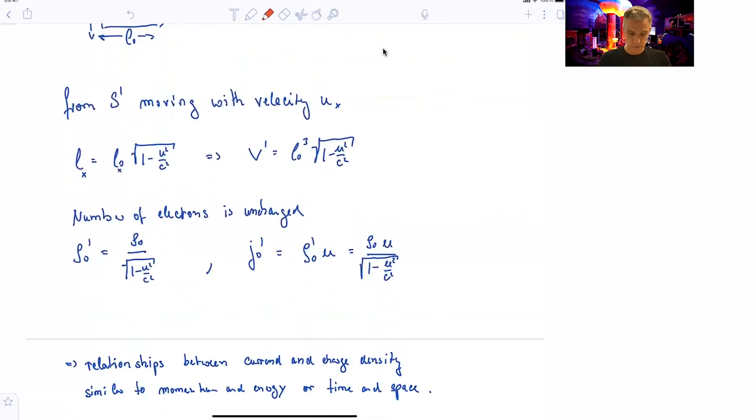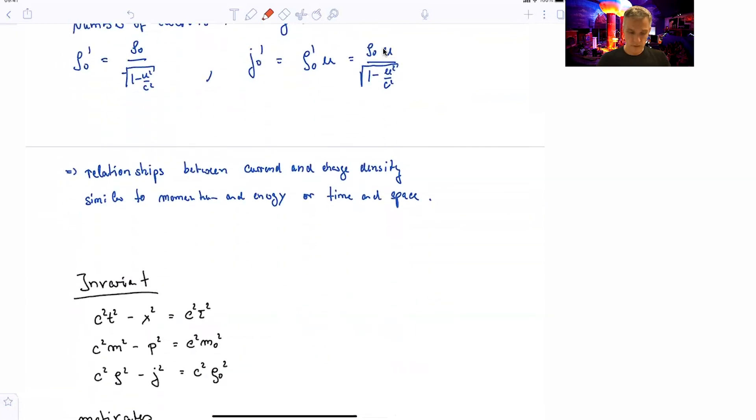OK, good. So if you look at those relations, they look very much like the relations between the current and the charge density. They look very much like the relations we had between momentum and energy and time and space. And Lorentz transformations look very similar.